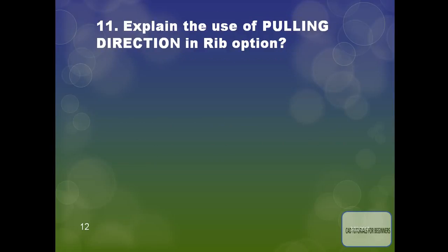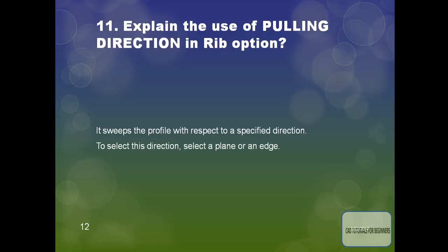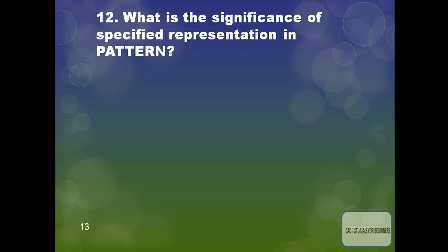Explain the use of pulling direction in the rib option. It sweeps the profile with respect to the specified direction. The rib just sweeps the profile with respect to the specified direction. To select this direction you can select a plane or an edge.